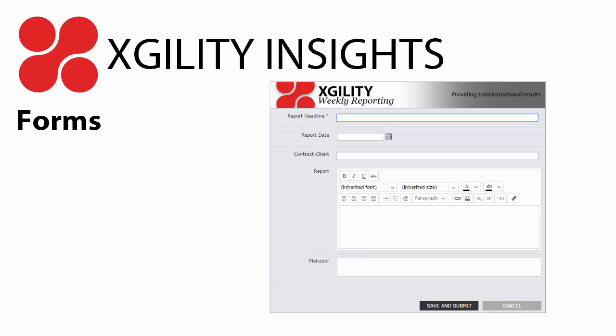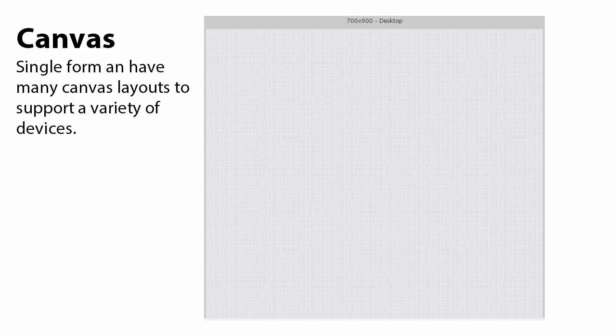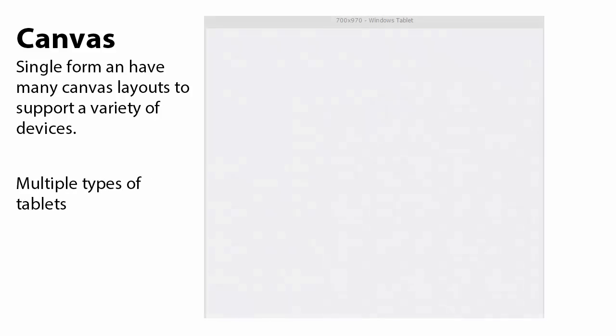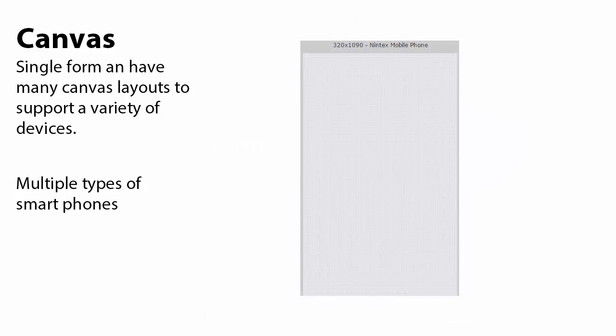Now let's take a look at the building blocks of a Nintex form. The background of the form is called the canvas — it's the working area where all of the form controls are placed. A single Nintex form can have multiple canvas layouts that support a variety of different devices, such as a computer desktop, multiple types of tablets, and multiple types of smartphones.